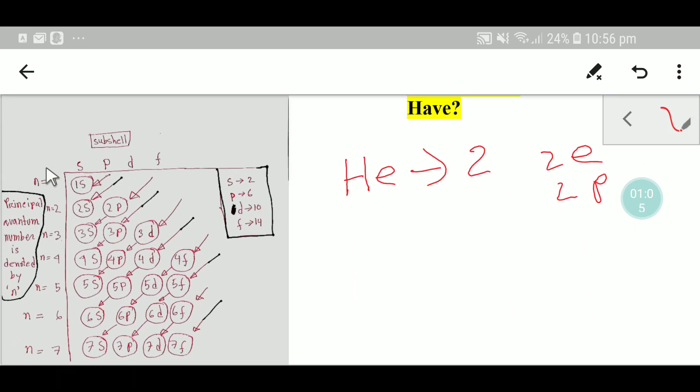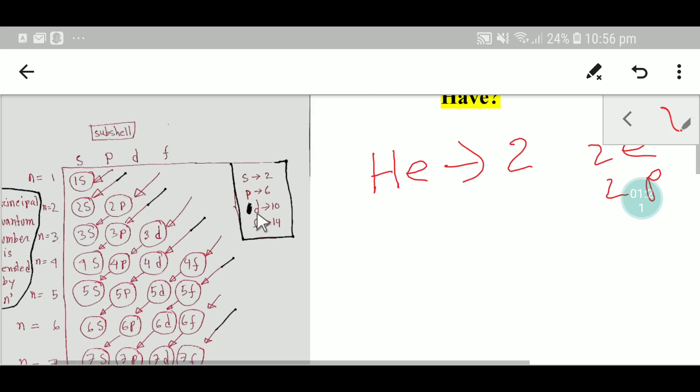We'll use this diagram based on the Aufbau principle. You know that s orbital can take maximum 2 electrons, p can take maximum 6, d can take maximum 10, and f can take 14. We have 2 electrons here.